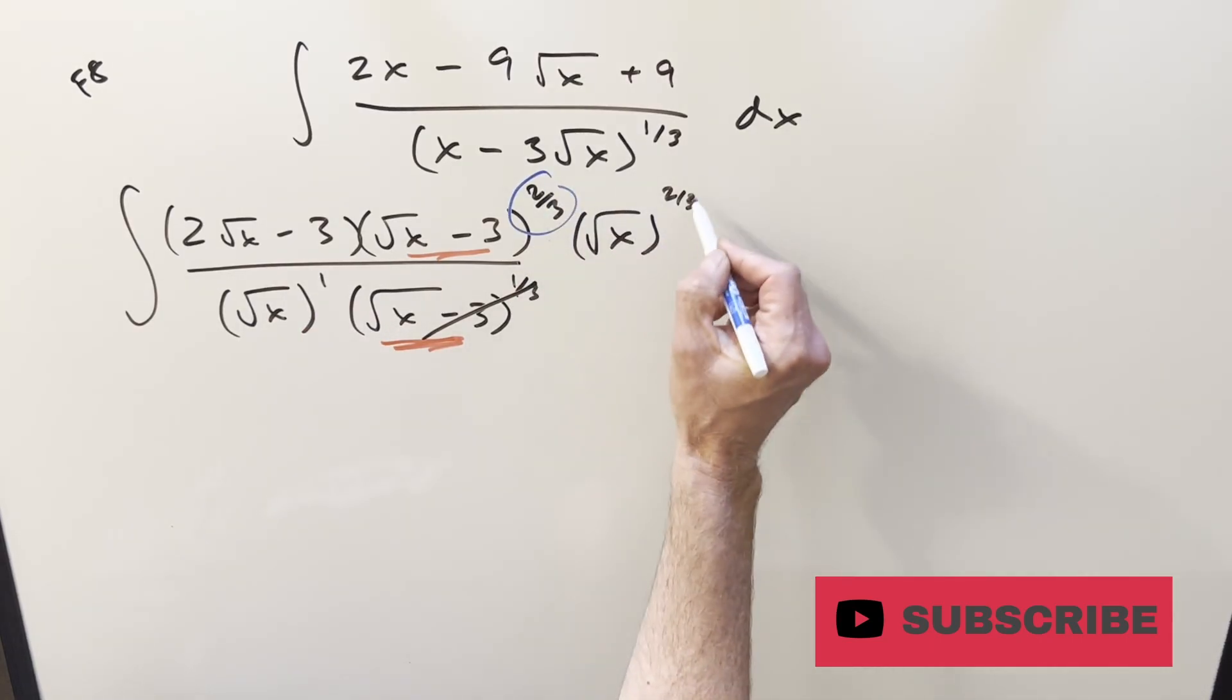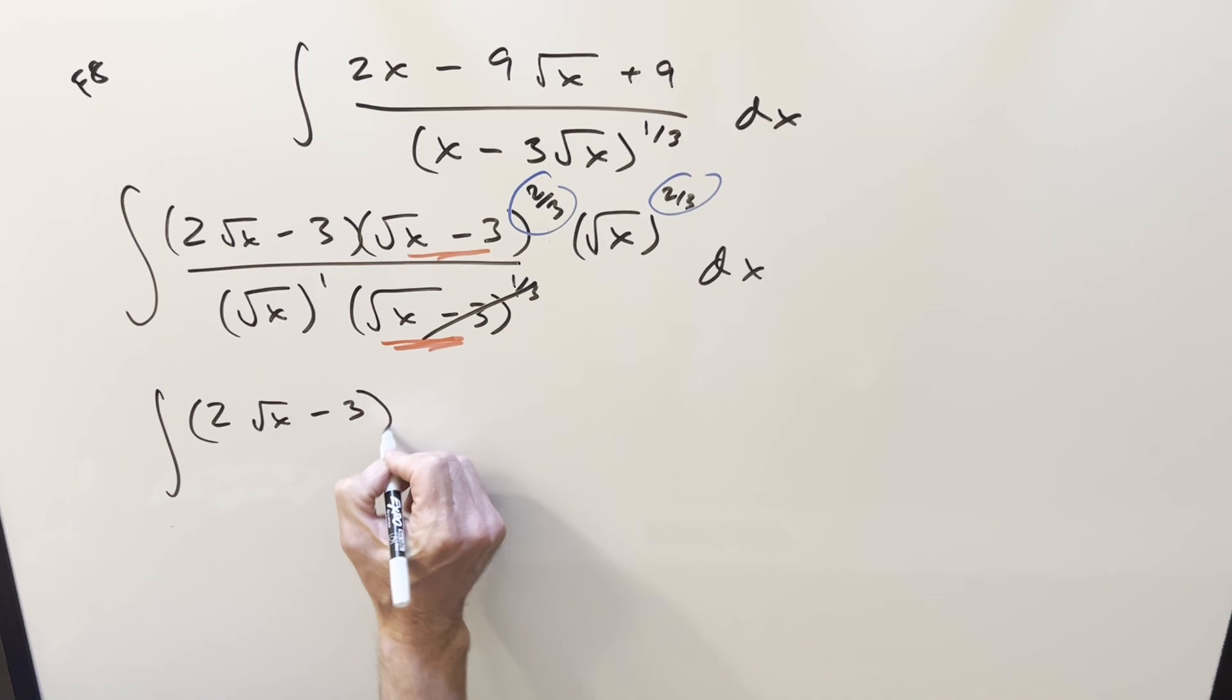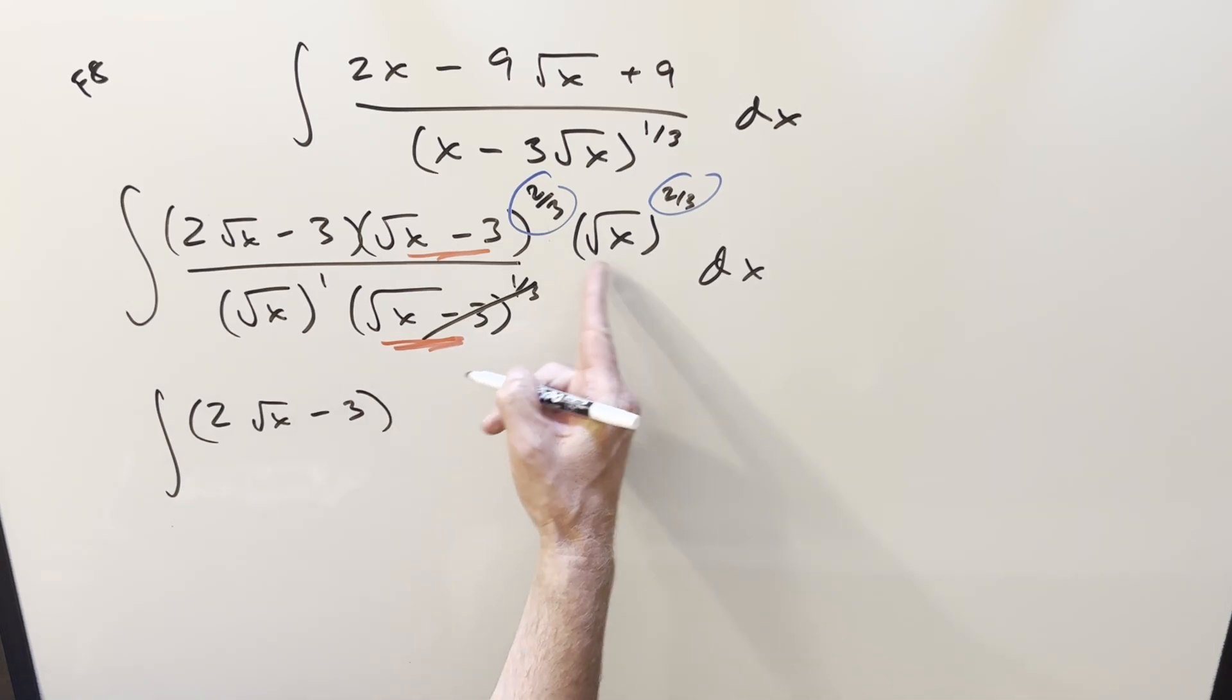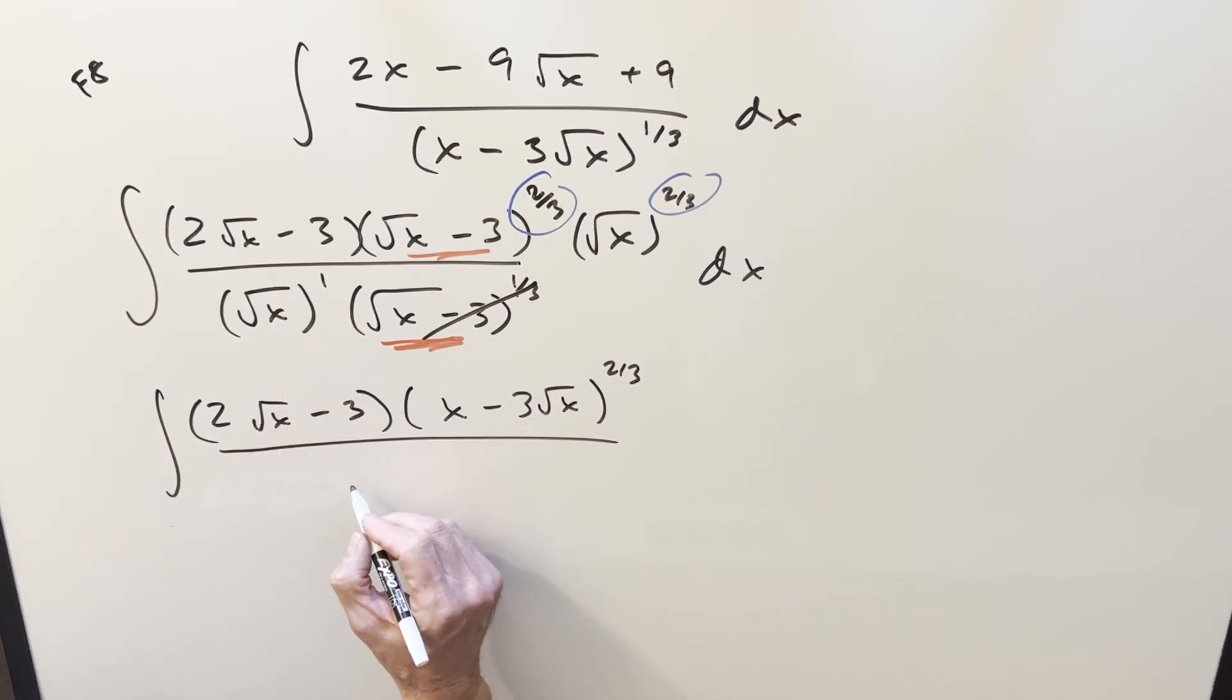Let's see how that's going to look. We're going to still have this 2 square root of x minus 3 over here. Distributing these out, square root of x times square root of x is an x minus 3 square root of x to the 2/3. And this is going to all be over this.